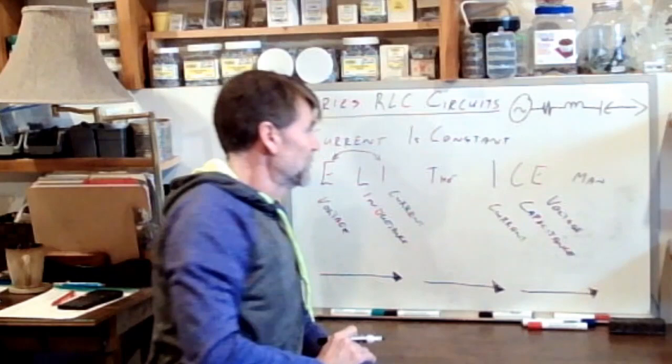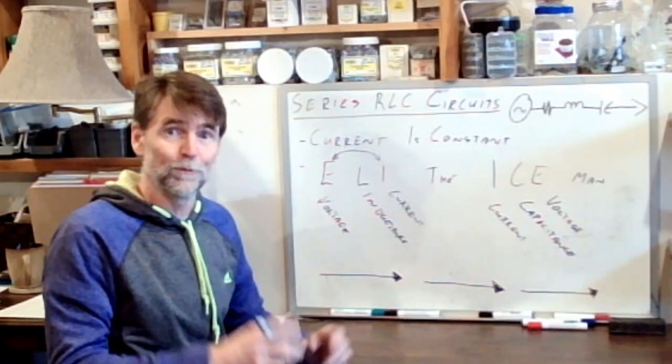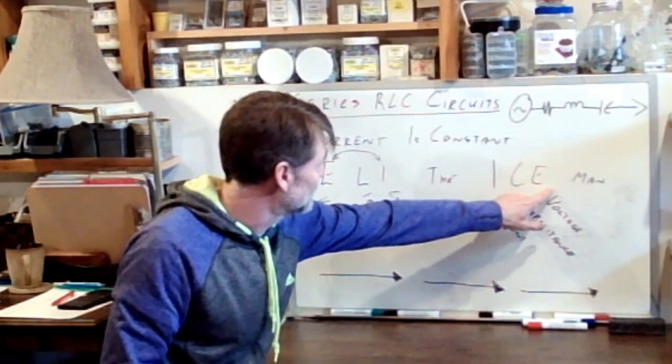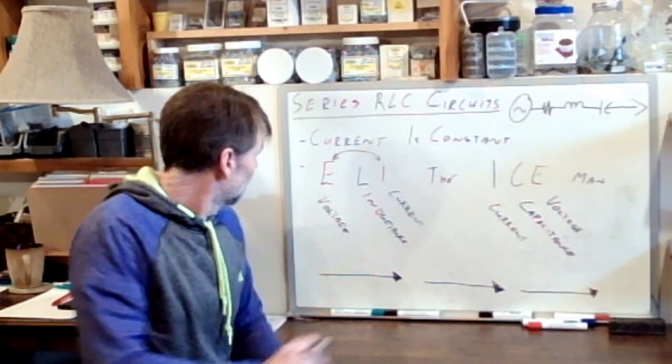So now we can see that in a capacitive circuit the current leads the voltage. These are things we already knew from previous lessons, but there it is, a nice way to remember it. Eli the Iceman. Current lags the voltage in an inductive circuit, and current leads the voltage in a capacitive circuit.